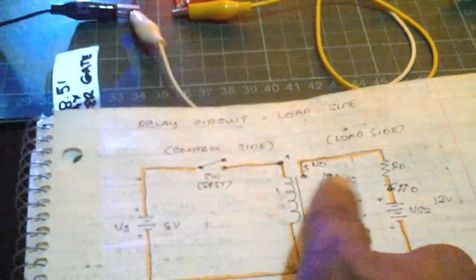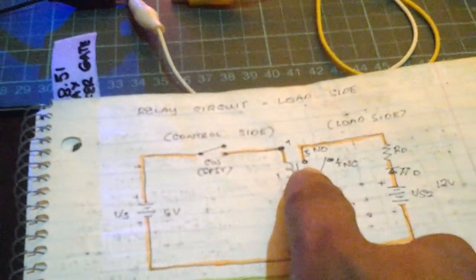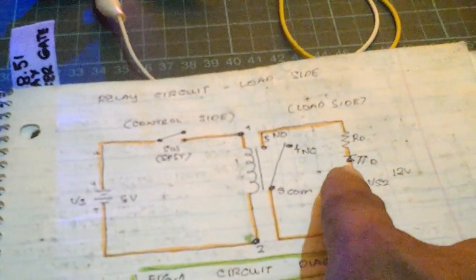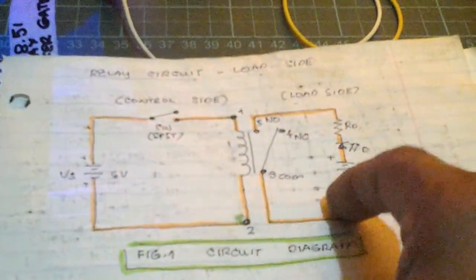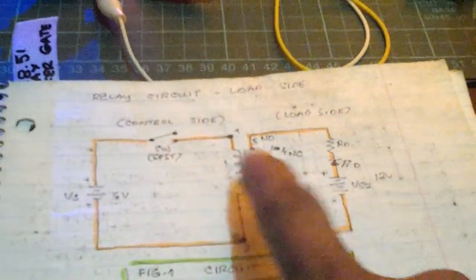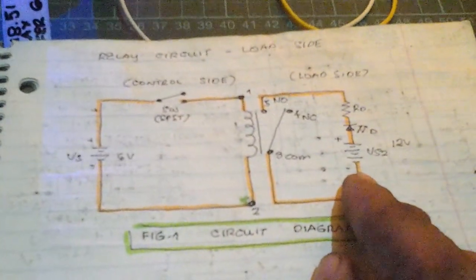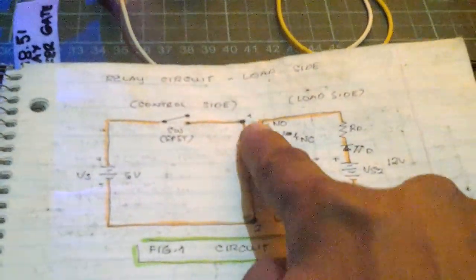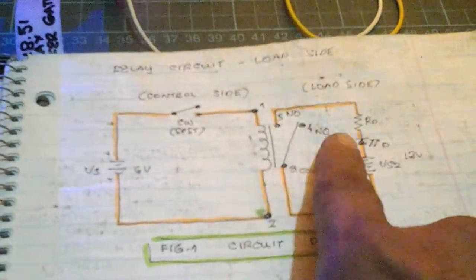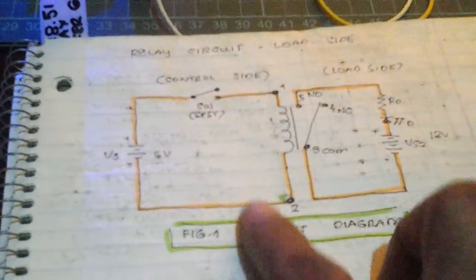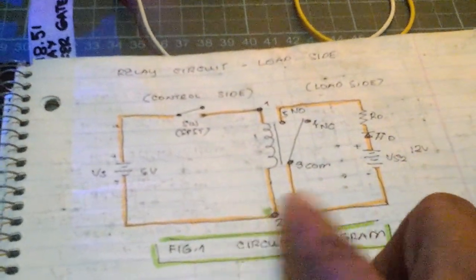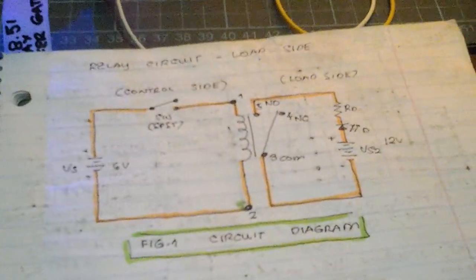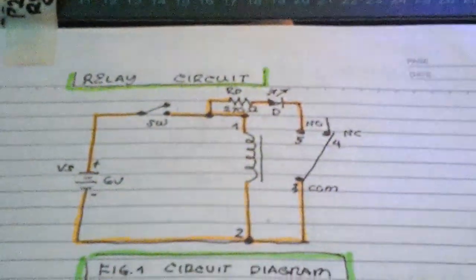The LED has its own power supply, so there is a closed circuit on that side. They are separated — electrically isolated. There is no electrical connection between the two. It's just one relay with two separate circuits: a control side and a load side.